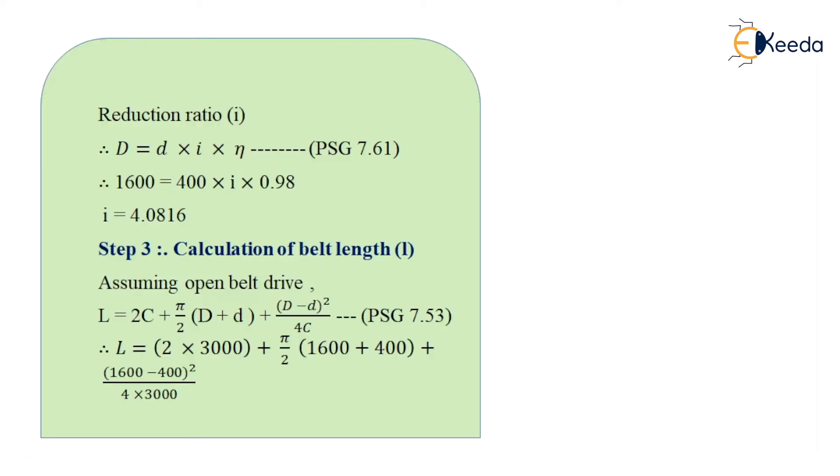The reduction ratio I is given as capital D is equal to small d multiplied by I into η. So I substitute the value of capital D as 1600, small d as 400, and η as 0.98. So I get the value of I that is reduction ratio as 4.0816.